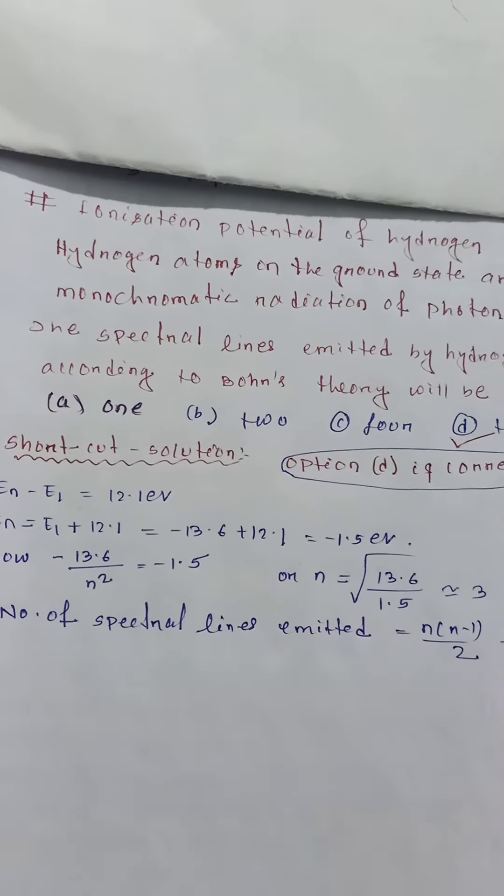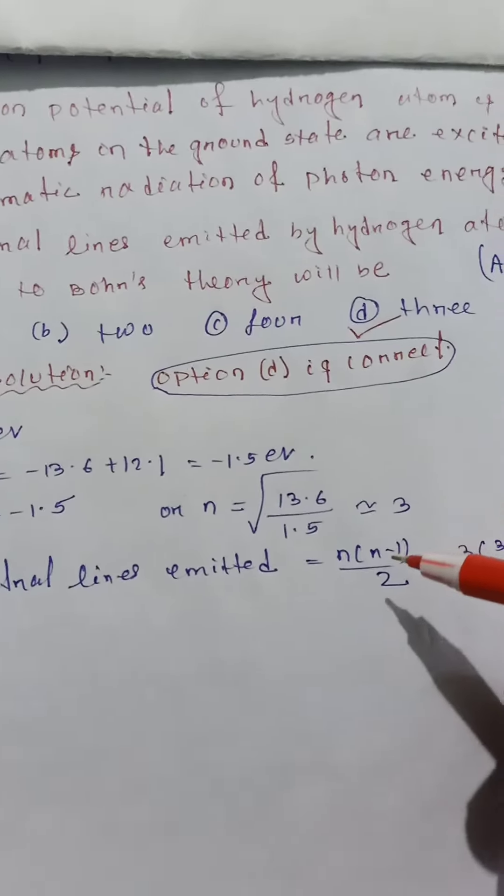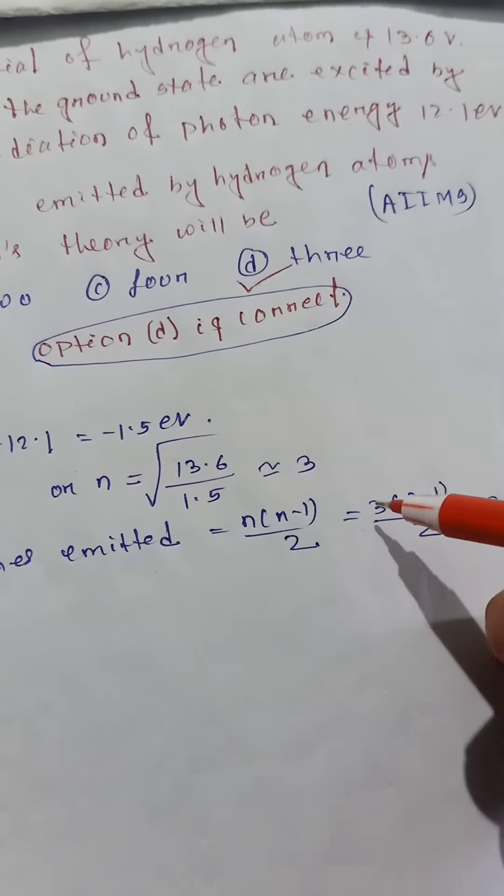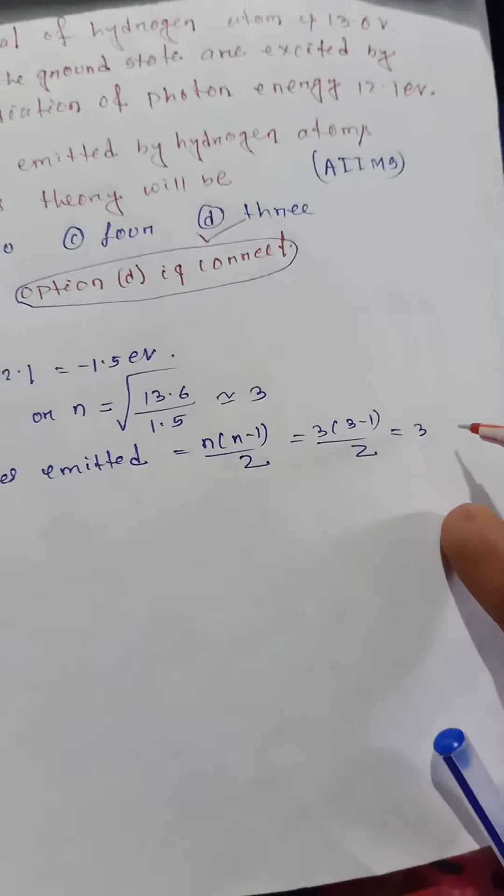The number of spectral lines emitted is equal to how much? That formula is n times n minus 1 divided by 2, which is equal to 3 times 3 minus 1 by 2, so 3 into 2, we get 3.